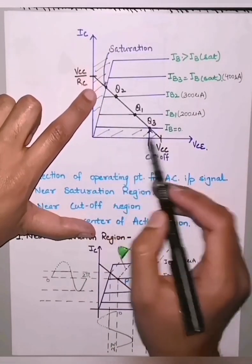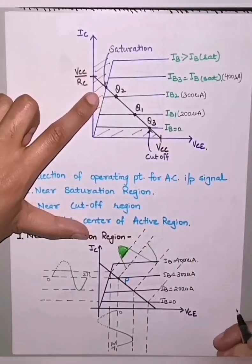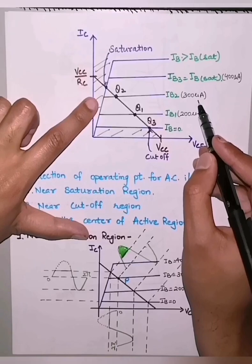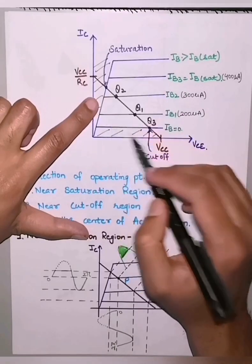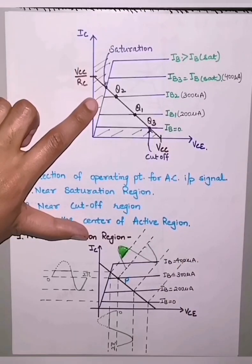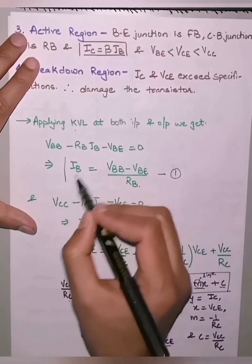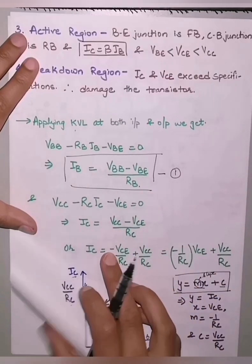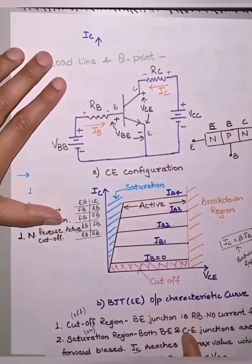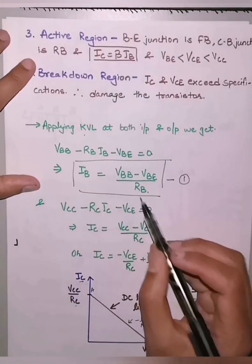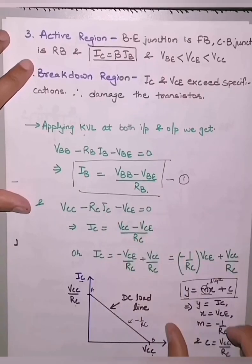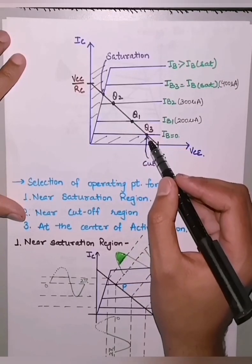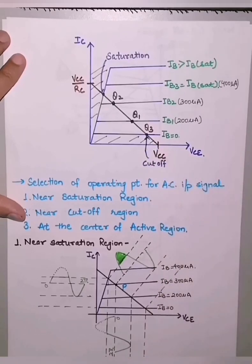The DC load line is shown on the characteristics curve, with the common emitter characteristics drawn in blue. Depending on the value of base current IB — for example IB = 0, IB1 = 200 µA, IB2 = 300 µA — we get different operating points. IB is obtained from the KVL input equation: IB = (VBB − VBE) / RB. Since VBE and RB are fixed, by using different values of VBB we get different values of IB, and wherever this intersects the load line gives the Q point.